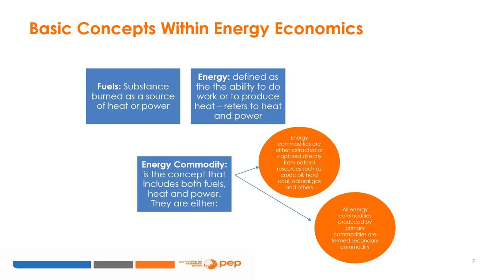Fuels are substances burned as a source of heat or power. Energy, defined as the ability to do work or to produce heat, refers to heat and power. An energy commodity is the concept that includes both fuels, heat and power. Energy commodities are either extracted or captured directly from natural resources, such as crude oil, hard coal, natural gas and others. All energy commodities produced by primary commodities are termed secondary commodities.